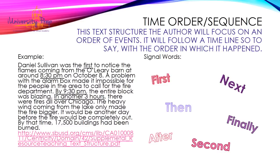Daniel Sullivan was the first to notice the flames coming from the O'Leary barn at around 8:30 p.m. on October 8. A problem with the alarm box made it impossible for people in the area to call for the fire department. By 9:30 p.m., the entire block was blazing. In another three hours there were fires all over Chicago. The heavy wind coming from the lake only made the fire bigger. It would be another day before the fire would be completely out. By that time, 17,500 buildings had been burned. Here we see key words such as first, but more so we see a timeline: 8:30 p.m., October 8; 9:30 p.m.; another three hours; and then another day — giving us a timeline we can follow.